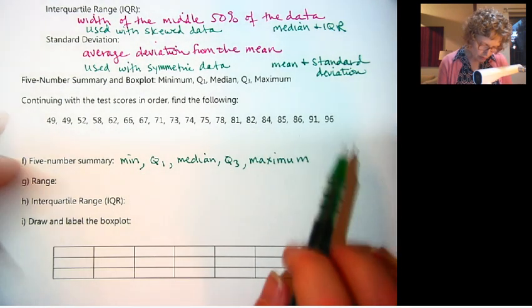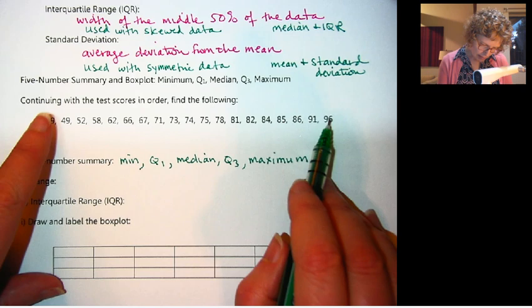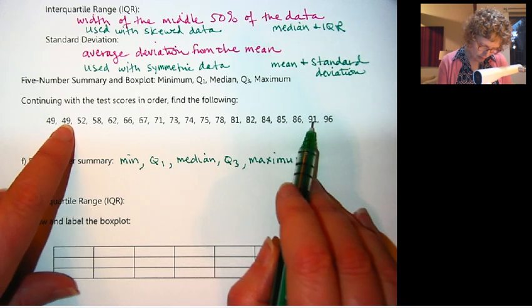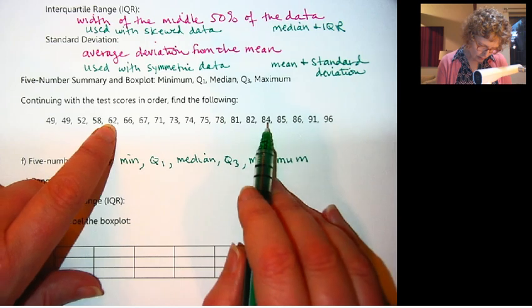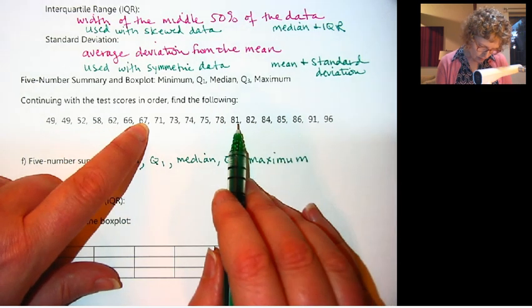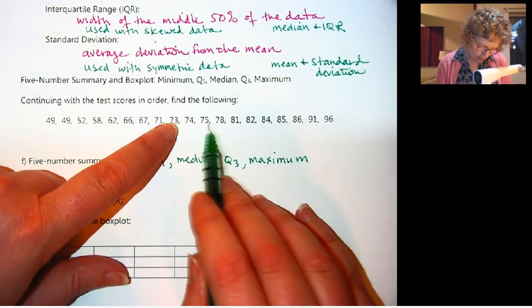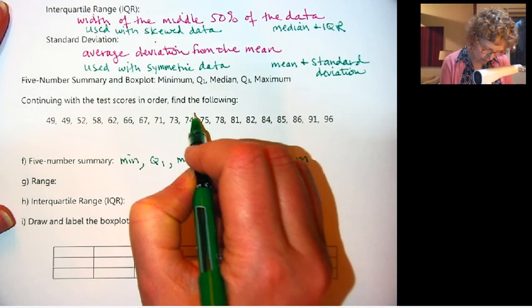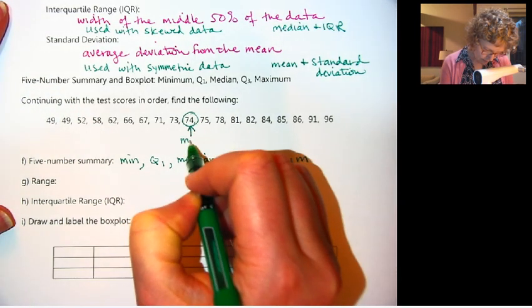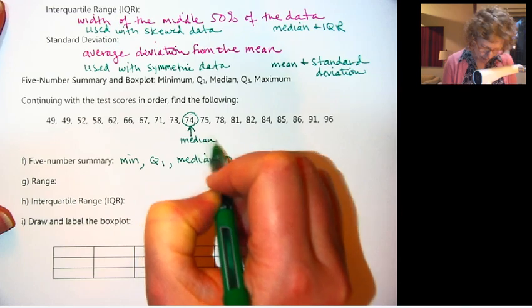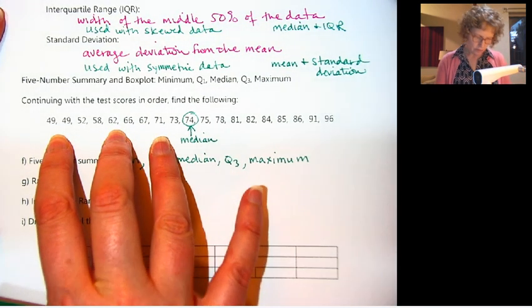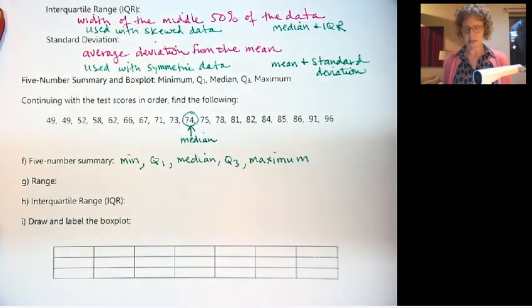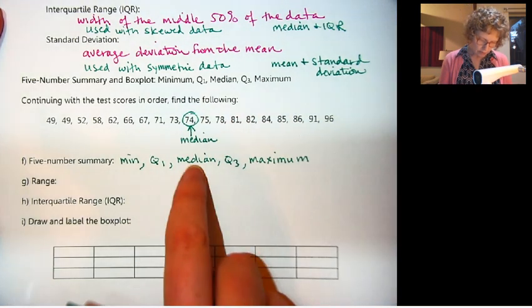Let me show you how to do that. Now we already found the median in the last video. I'm just going to double-check it, going in one each time. Yes, that's right. It was 74. So that's our median.